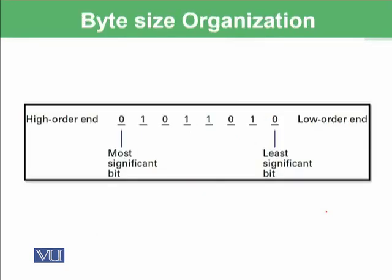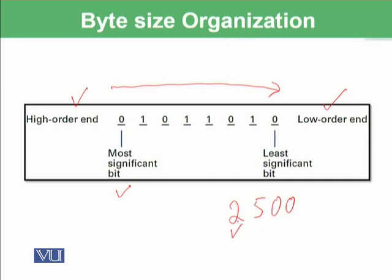Looking at the byte-size organization, we write a byte from left to right. On the left side, we call it the most significant bit or high-order end. On the right side, we call it the low-order end or least significant bit. This is similar to how we store data in decimal — for example, when you say 2,500,100, this 2 is the most significant in decimal because it represents 2,000,000. Similarly, in a bit pattern, the leftmost bit is known as the most significant bit.